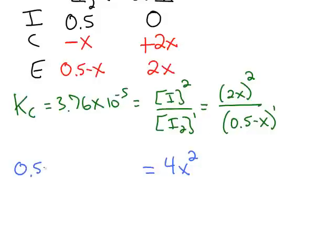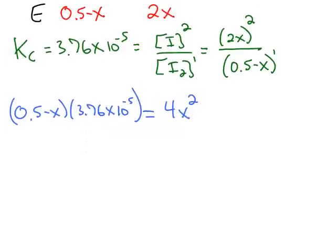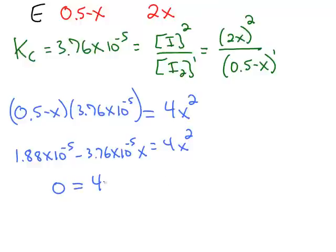And I can get rid of the parentheses on the right-hand side by expanding out 2x quantity squared and rewriting that as 4x squared. And I'm going to bring the 0.5 minus x over to the left, and then I have to distribute to get rid the parentheses on the left. And then to get this into the format of the quadratic formula, I want to bring all of this over to the same side with the x squared. So if I rewrite this, I'm going to have 0 equals 4x squared plus 3.76 times 10 to the negative 5th times x minus 1.88 times 10 to the negative 5th.